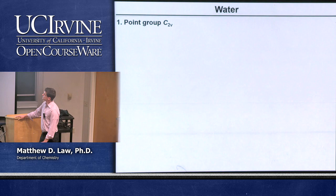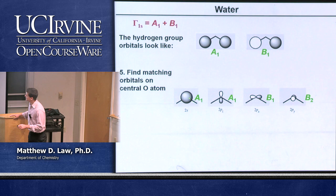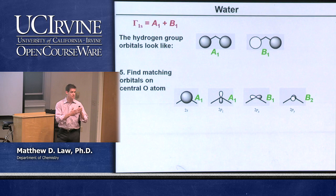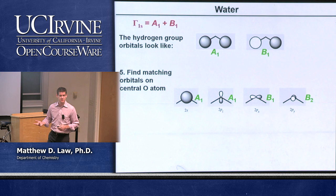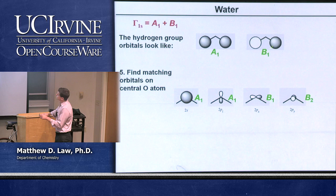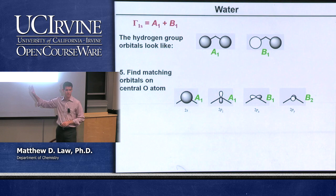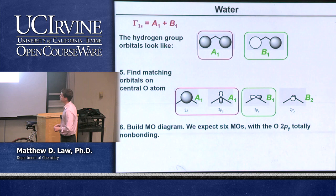Looking at the shading diagrams: the a1 is totally symmetric, so we take the two 1s orbitals with the same sign. The s orbital on oxygen is a1, the pz is also a1. The b1 group orbital matches with the 2px. The 2py has totally different symmetry — it's coming out at you in the picture — and has zero overlap by symmetry with either group orbital, confirming it's non-bonding. We have six total orbitals, so we'll have six MOs. We have the a1 interactions, the b1 interactions, and py is the odd one out.